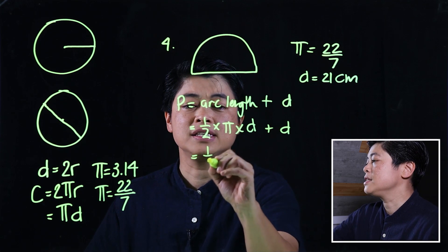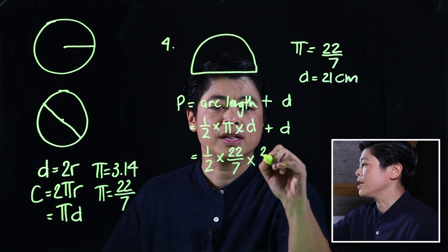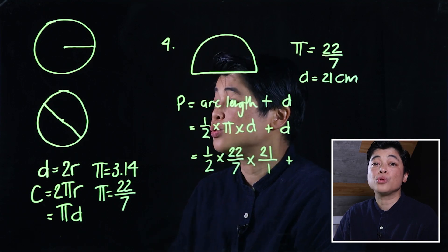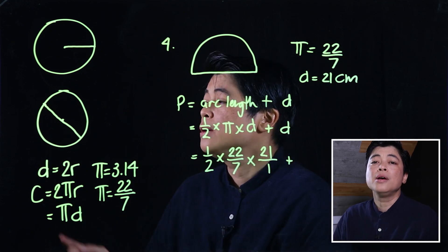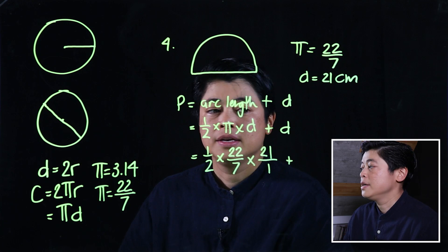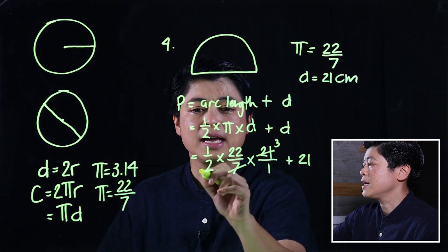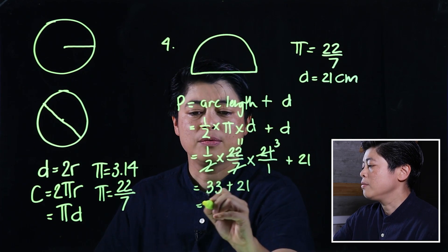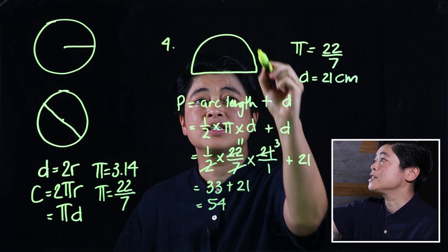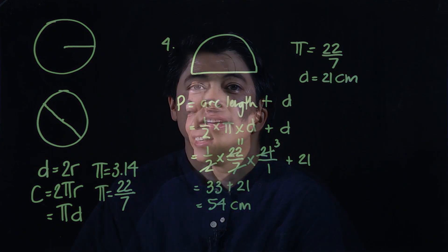Then it says to add the d. So when we compute this, this is 1/2×22/7×21/1 plus 21. When we do fractions, anything in the numerator will cancel with anything on the denominator. So if we cancel, that's 3, that's 11. That makes it 33+21, which makes the perimeter of this semicircle equal to 54 centimeters. That concludes lesson 1 of chapter 5.